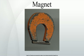Superconductors repel magnetic fields from their interior and are strongly diamagnetic. There are various other types of magnetism, such as spin glass, superparamagnetism, superdiamagnetism, and metamagnetism.